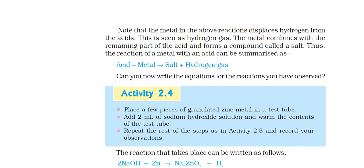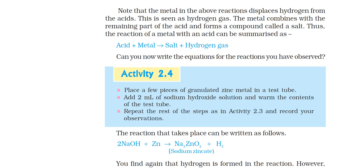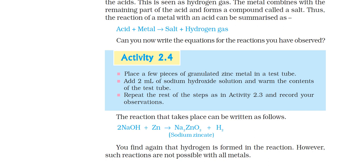The metal is combined with the remaining part of the acid and forms a compound which is called salt. That is why we can summarize the reaction: when acid and metal react, they produce salt and hydrogen gas evolves. Now you can write the equation of the reaction which you have observed. In Activity 2.4, place a few pieces of granulated zinc metal in a test tube. Add 2 ml of sodium hydroxide solution, warm the contents, and heat the test tube.